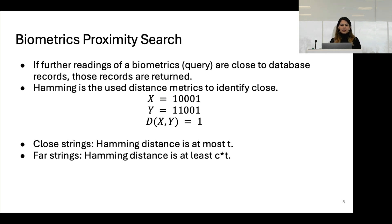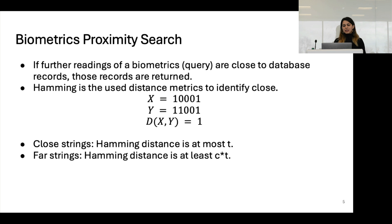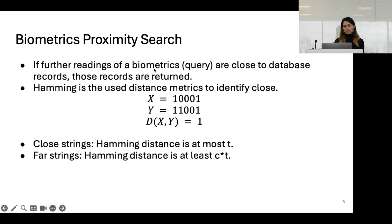On the other hand, far readings belong to different people, so they should have completely different string representations. The goal of biometric proximity search is that if further readings of a biometric — which we call the query — are close to a database record, those records should be returned. The metric we use is Hamming distance, which counts the number of differing positions in a string. For example, if strings x and y differ in only one place, the Hamming distance is 1.